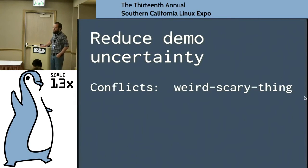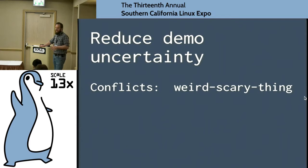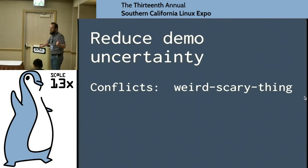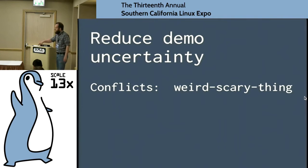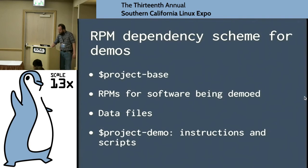Another thing to do in demo RPMs: don't be afraid to stick a whole bunch of conflicts in there, even if it doesn't actually conflict. Remember: controlled environment. If you're not sure if something is going to break your demo system, and you don't have time to test all the different combinations — you don't want to say 'it'll probably work if the user's running their own mail server on localhost' — just conflict that thing out. Make the conflict lines for everything that might give you grief in your demo and reduce your uncertainty.